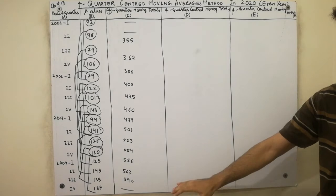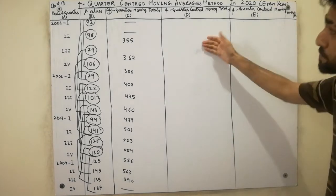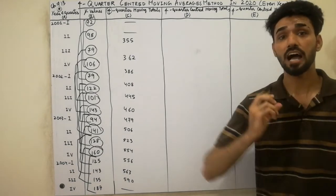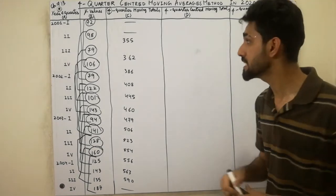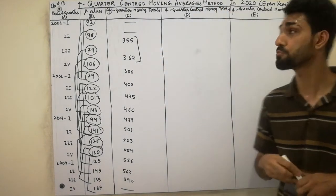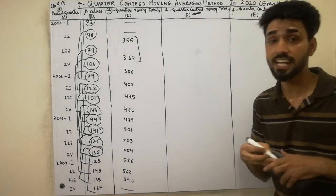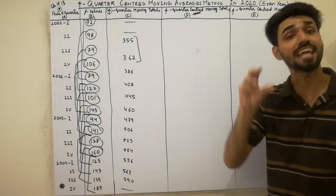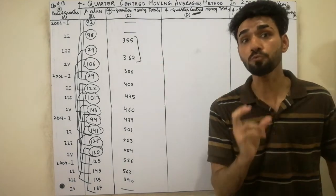Now moving to the second point: the Four Quarters Centered Moving Total. This is very important and very basic. How do we calculate it? In this step, we add up two values — specifically the two centered moving total values we just calculated. It says 'centered,' meaning we add up centered values in pairs.